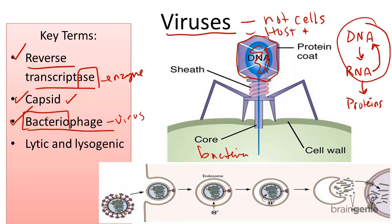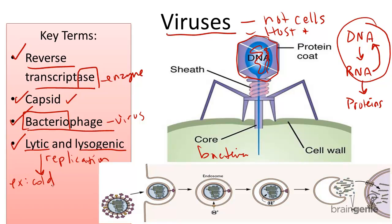Finally, the viral genome can enter two types of cycles: the lytic cycle and the lysogenic cycle. These cycles are just two different methods of replication. The lytic cycle, such as when a virus causes the common cold, produces an active infection usually within one to four days.